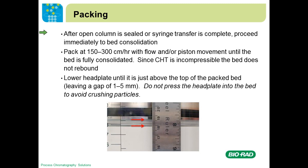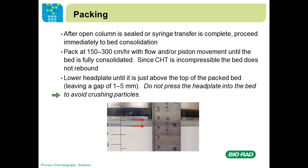Once the slurry is in the column, proceed to bed consolidation right away. It typically takes only a few minutes to pack the whole column. Pack at 150 centimeters per hour for 40 micron material, or 300 centimeters per hour for 80 micron material. You can use flow, piston movement, or both — it doesn't matter. Continue until all particles are down at the bottom of the bed. Since CHT is not compressible, the bed doesn't rebound. Once all particles have settled, lower the head plate until it's just above the top of the packed bed, leaving a gap of 1 to 5 millimeters. Do not press the head plate into the bed, as these particles are incompressible and you'll start crushing them.